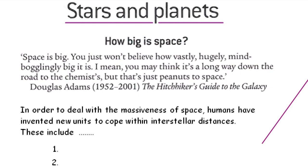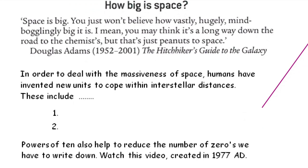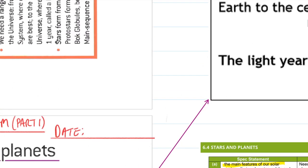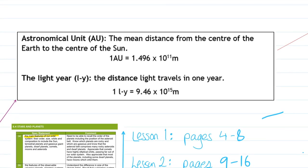So the first thing I'd like you to do, because we need to understand this before we understand the size and scale of space, is to write here and here two new measurements: the astronomical unit and the light year. So here's the definitions of those two. If you can just pause the video and write them down and I'll give a quick explanation after.